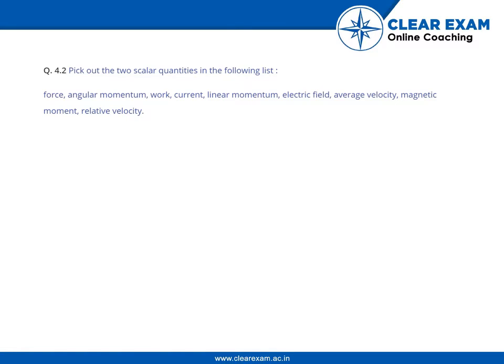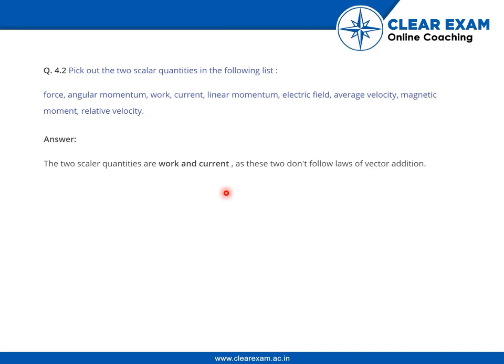Let us go through this question. First, pick out the two scalar quantities in the following list. There are a number of quantities given; we need to find out the scalar quantities amongst them. The two scalar quantities are work and current, as these two don't follow the laws of vector addition.